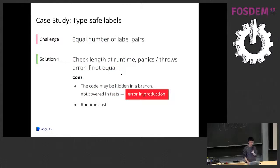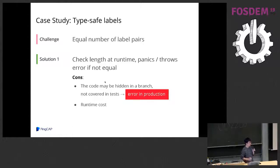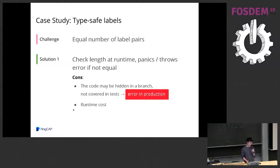When defining a counter_vec, you provide three label names, and when recording you call counter.with_label_values with three label values. There is a restriction: the number of labels defined and the number of label values provided must be the same. Normally you could check the length at runtime and panic or throw errors if they don't match. But this has disadvantages — your code may be hidden in a branch that tests don't cover, so the error reaches production. And there is a runtime cost from checking the length.